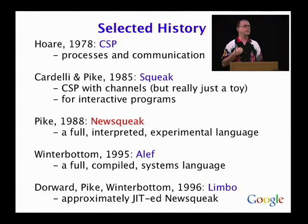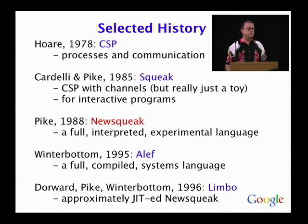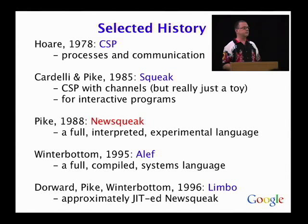NewSqueak had users who went off and did interesting things, and it also inspired a few other languages. Phil Winterbottom in 1995 built essentially a compiled NewSqueak that we used as a systems language at Bell Labs, writing essentially all the big systems in this concurrent, C-like language with full message passing. Then Phil Winterbottom, Sean Dorit, and I did a language called Limbo, which is still a product sold by a company called Vita Nova as part of the Inferno project. If you understand NewSqueak programs, you can understand Limbo programs, though Limbo has a JIT and is reasonably efficient.